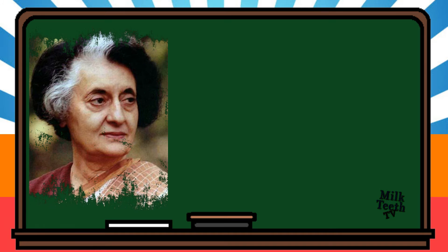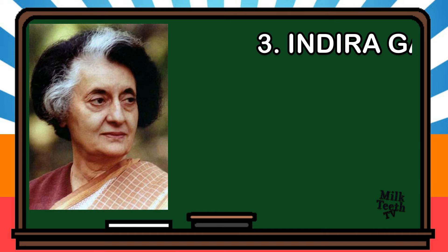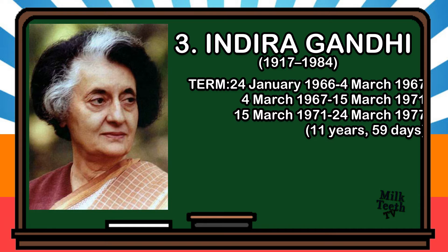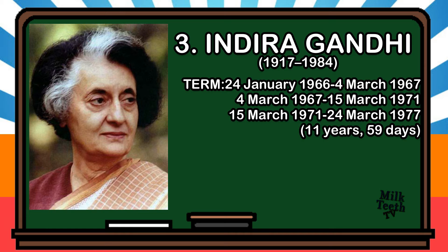The third Prime Minister of India was Indira Gandhi. She was born on 19th November 1917, the daughter of Jawaharlal Nehru, and the first and only female Prime Minister of India. Her term lasted for 11 years and 59 days, beginning on 24th January 1966 until her assassination in October 1984. She was the second longest serving Prime Minister after her father. Party: Indian National Congress.